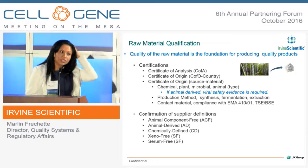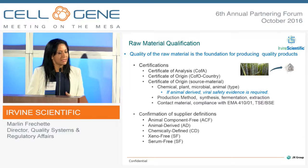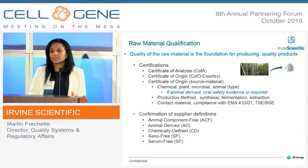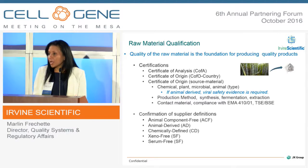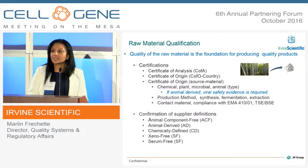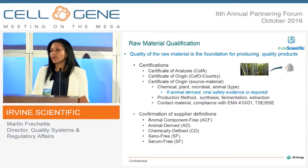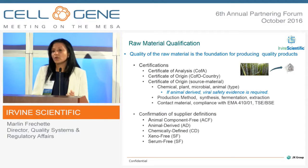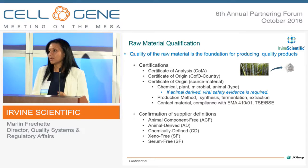We also require production method documentation — whether it is synthesis, fermentation, or an extraction method. Contact material is also assessed: even if the raw material itself is not animal-derived, if it goes through a process where it contacts animal-derived equipment or components, we require attestation that the raw material is viral safe. Additionally, we confirm supplier definitions against our own animal component-free and animal-derived definitions; we do not simply adopt the supplier's definitions — we ensure they match our own.